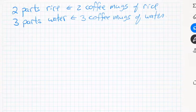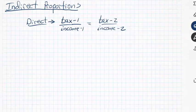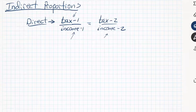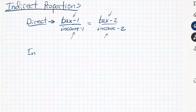Let me talk about direct proportions before jumping into indirect. A direct proportion — also known as a flat tax — is if you have income 1 and pay a tax on it, and you change your income to something larger next year, your tax gets larger. That's a direct proportion: tax 1 over income 1 equals tax 2 over income 2. As income goes up, taxes go up.